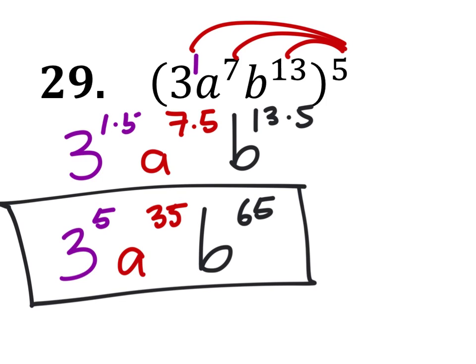So, Josie, you could write this as 243, a to the power of 35, b to the power of 65.